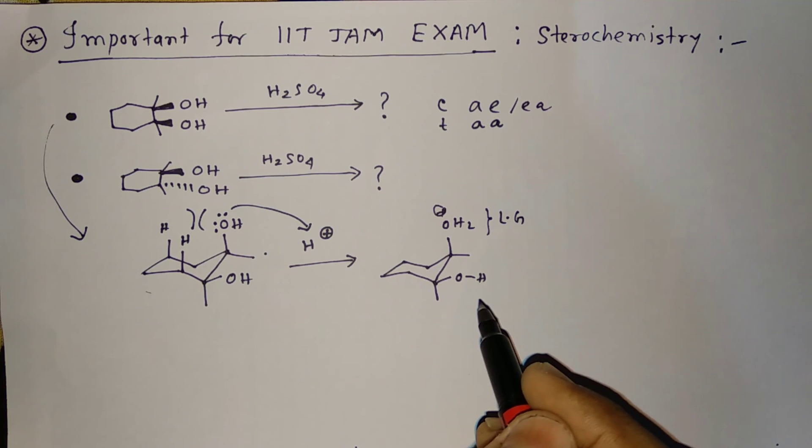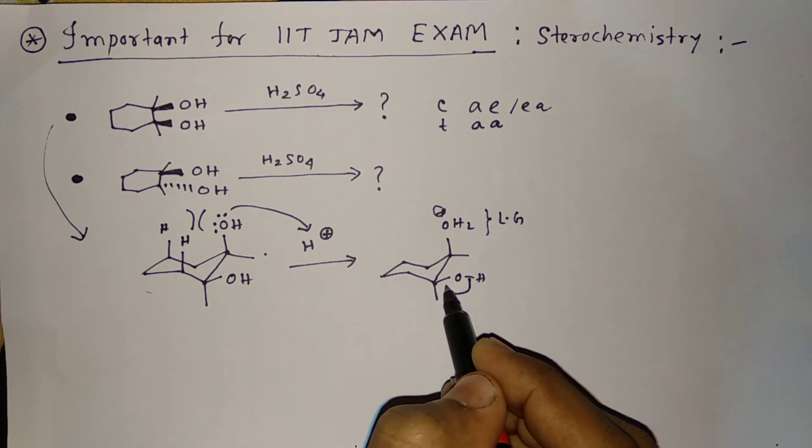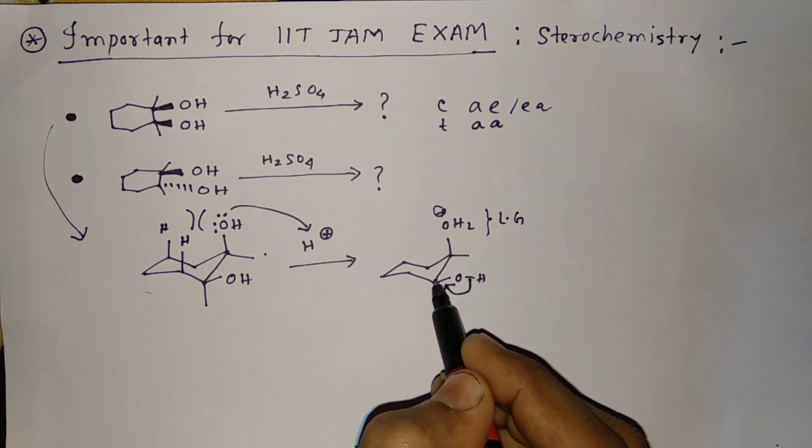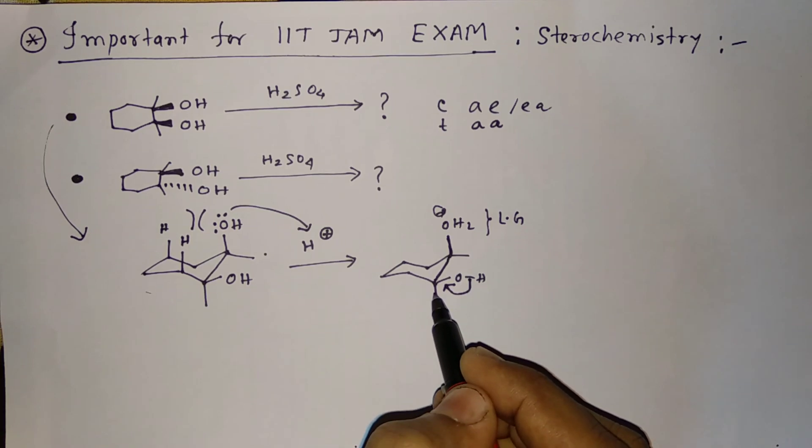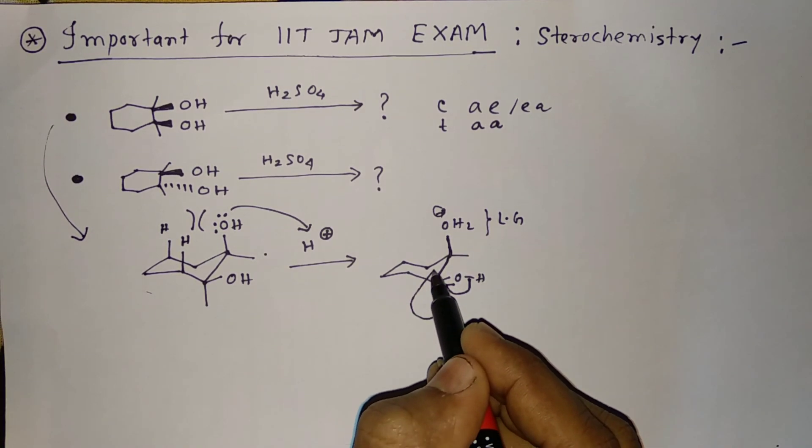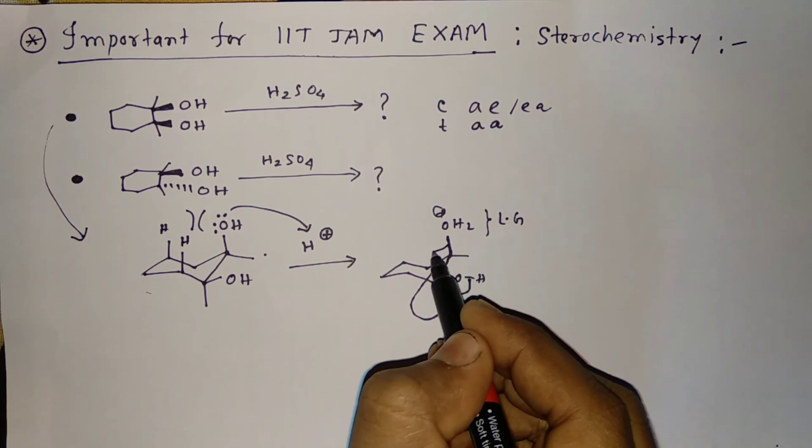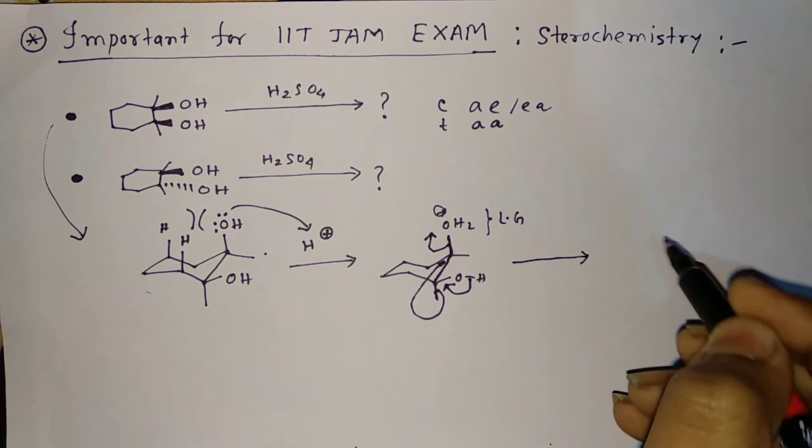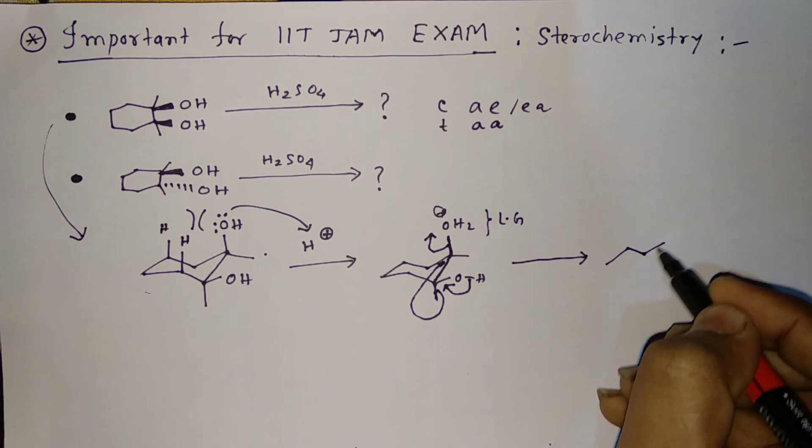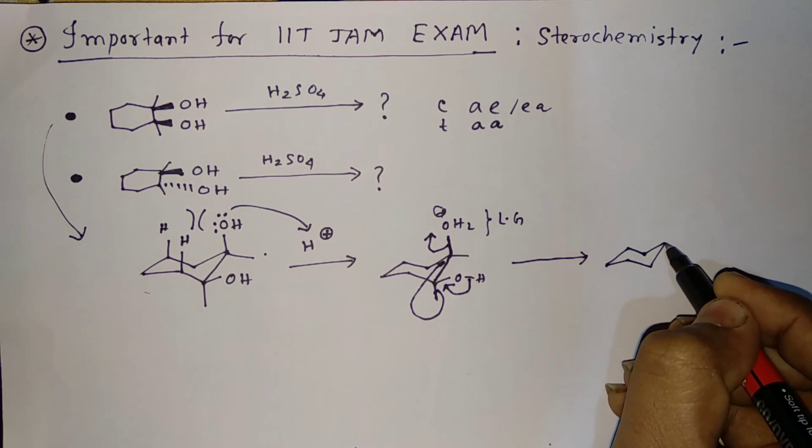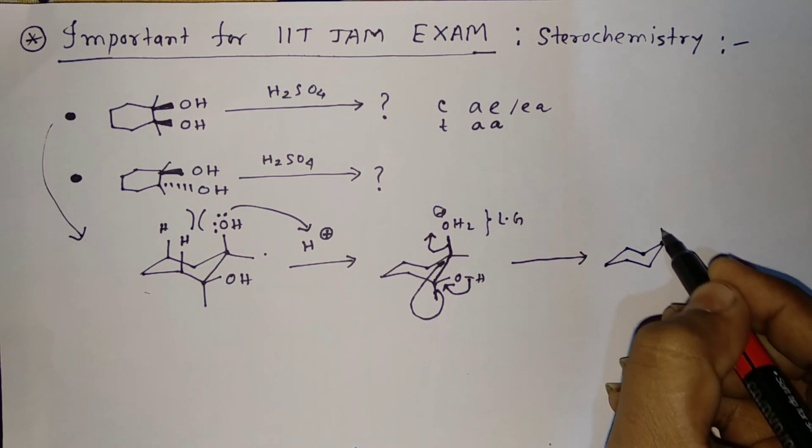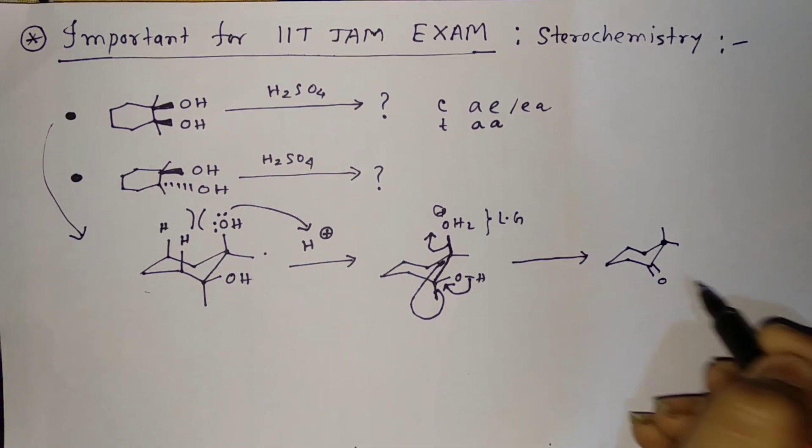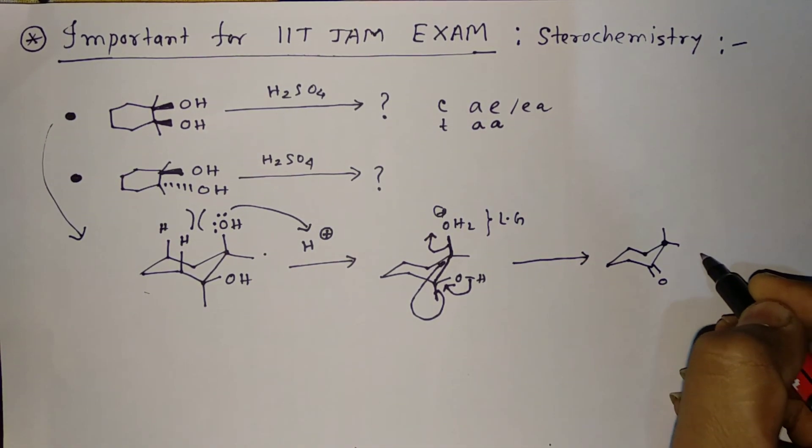Then pinacol-pinacolone rearrangement will occur. First like this, then these are anti to each other. Therefore, this bond will shift to here and OH₂⁺ leaves the system. Then we will get this kind of system.